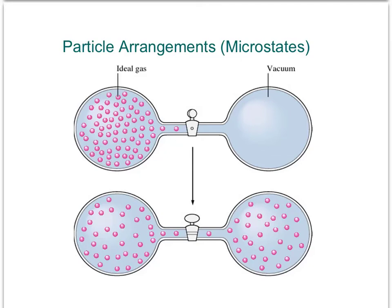When discussing positional entropy, you must first define the positional possibilities within the system of interest. Let's not get worried about being bogged down in the details of any terminology, but these different positional probabilities are called cohorts.